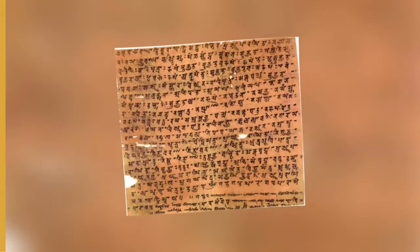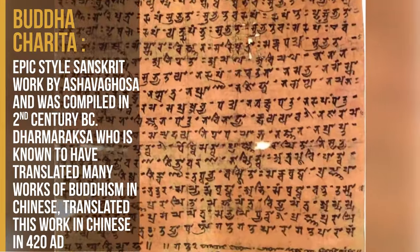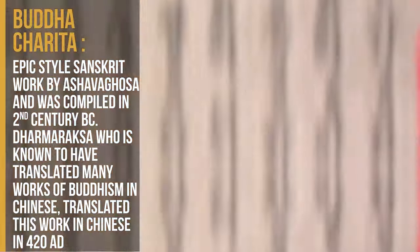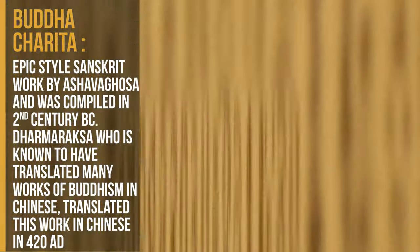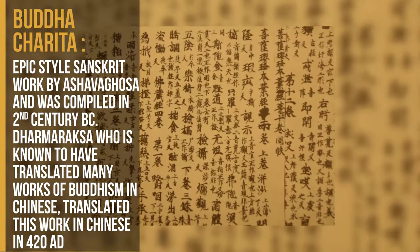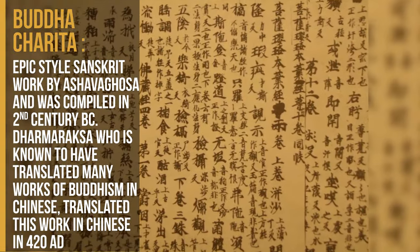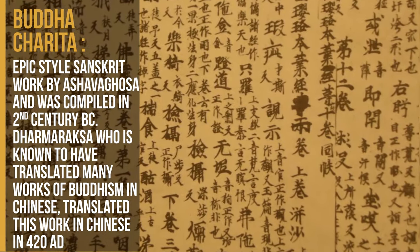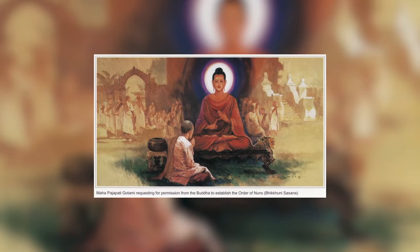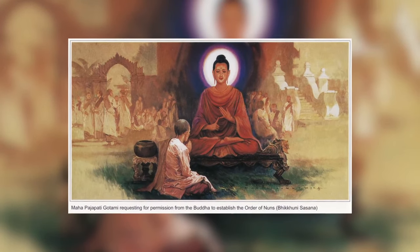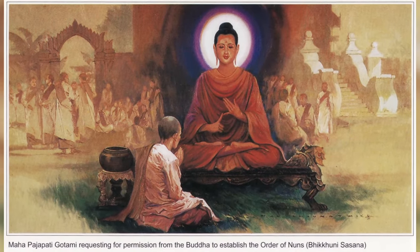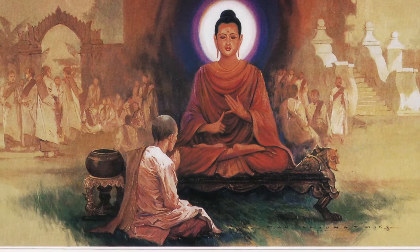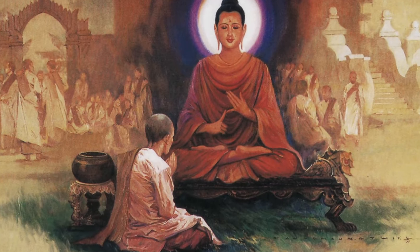Buddha Charita — Buddha Charita is an epic style Sanskrit work by Ashvagosha and was compiled in the 2nd century BC. Dharma Raksha, who is known to have translated many works of Buddhism into Chinese, translated this work in Chinese in 420 AD. It mainly deals with Buddha's life.